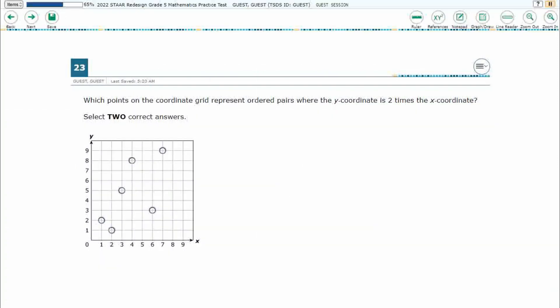So 4, 8, and 1, 2. Let's bump that in. 4, 8, and 1, 2. Those are your answers.